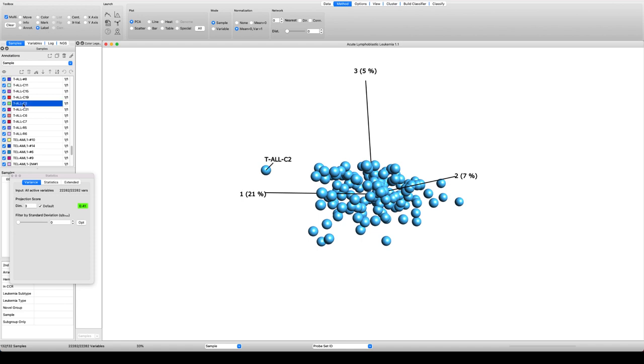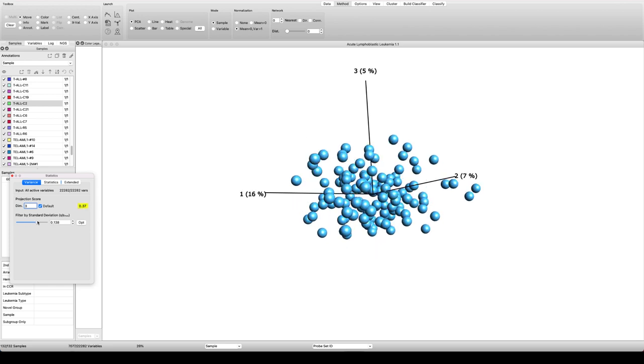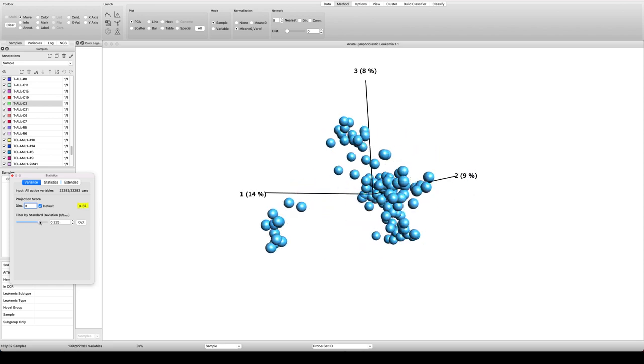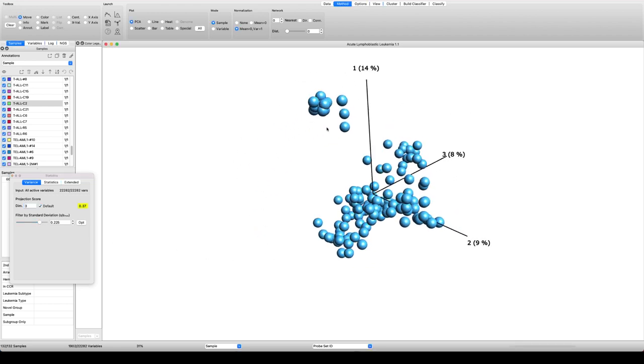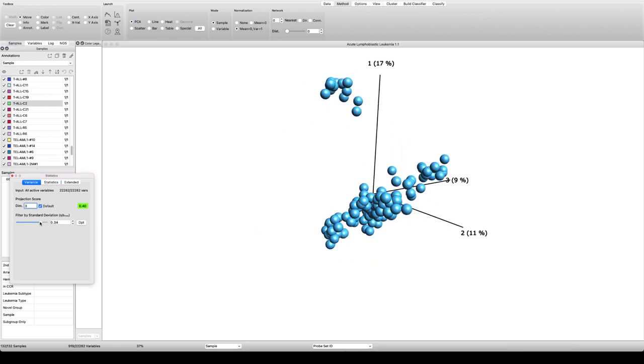The methods we will use are variance filtering to reduce noise, temporary removal of groups, principal component analysis, and t-SNE plots. Note the instant response in how the plot is updated as the slider position changes. We can see that the data splits in at least two groups.